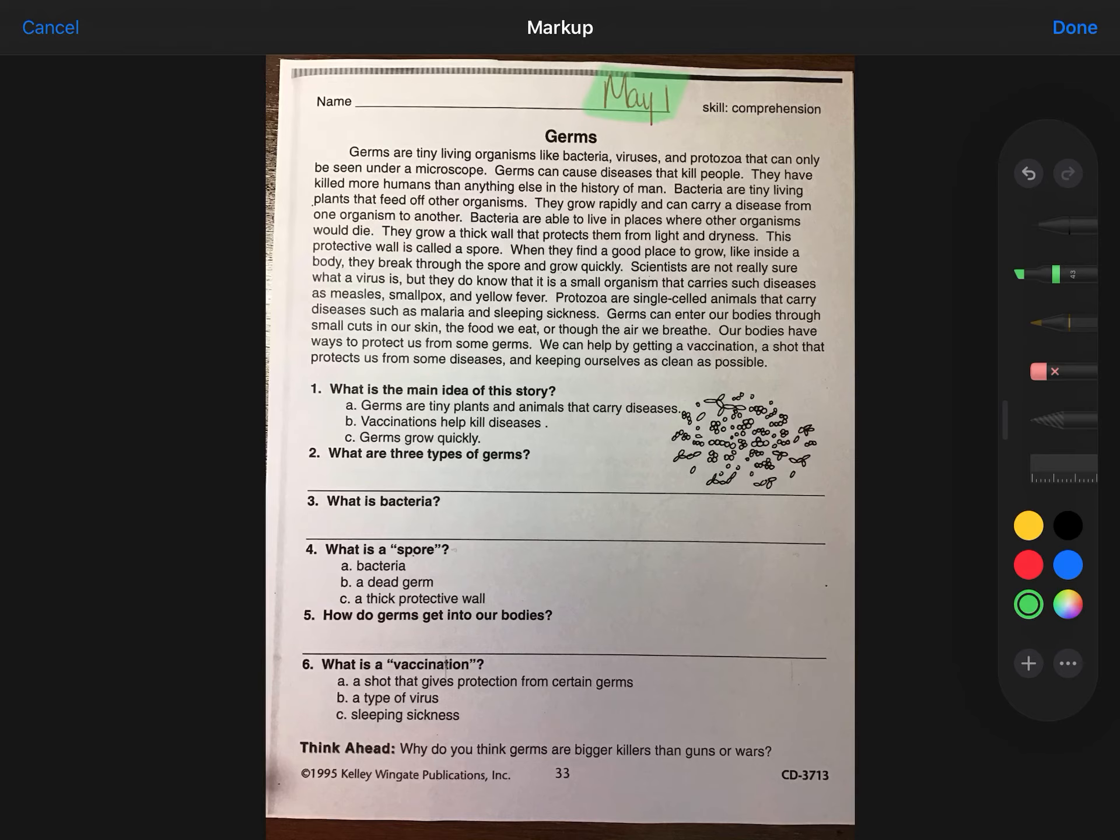Germs. Germs are tiny living organisms like bacteria, viruses, and protozoa that can only be seen under a microscope. Germs can cause diseases that kill people. They have killed more humans than anything else in the history of man.